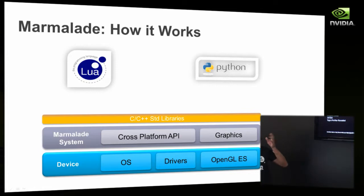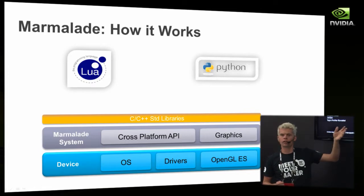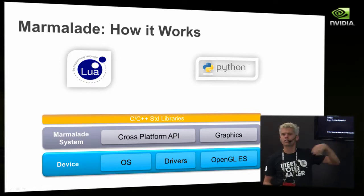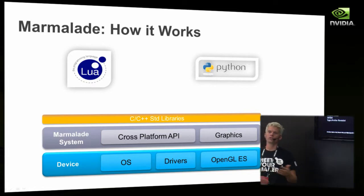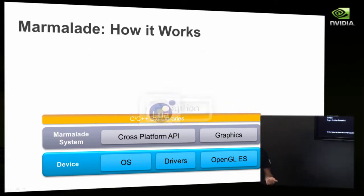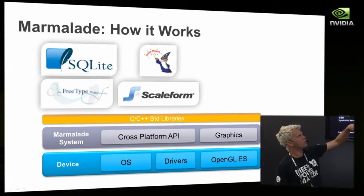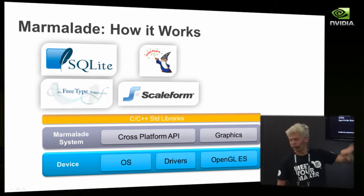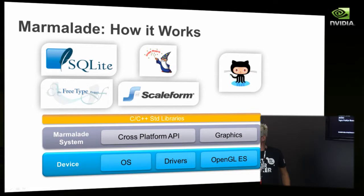You can embed entire language runtimes on Marmalade. We've done Lua and Python, and you can also add Ruby or V8. Any runtime written in C or C++ against POSIX and OpenGL should compile unmodified because we support standard POSIX systems. Other libraries we provide include SQLite, FreeType, and integrations with Scaleform — a Flash runtime. You can find lots of other middleware on our GitHub page.